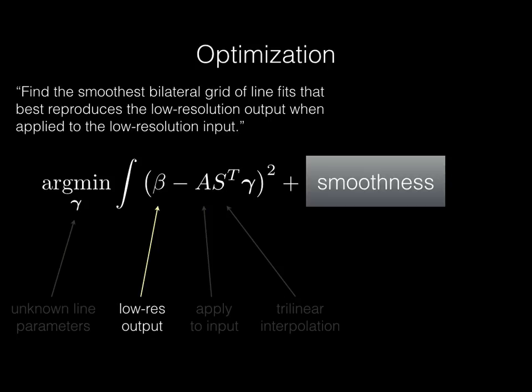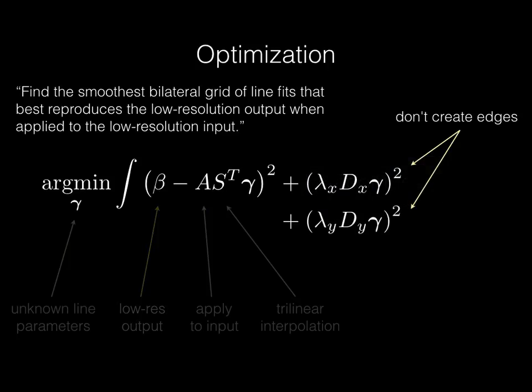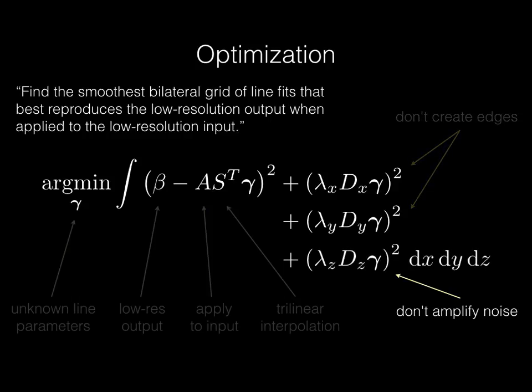Since we don't have data everywhere, we regularize our problem with the smoothness priors I talked about earlier. We want the spatial derivatives of gamma to be small, so we don't create false edges. And we also want to make the intensity derivatives of gamma small, because otherwise we would amplify noise.